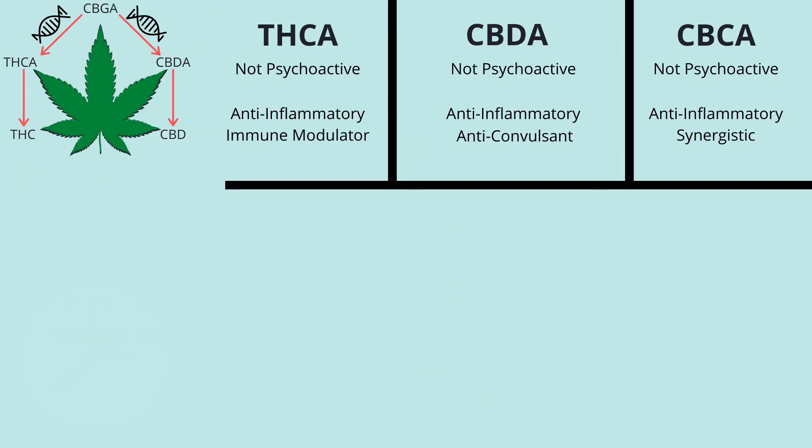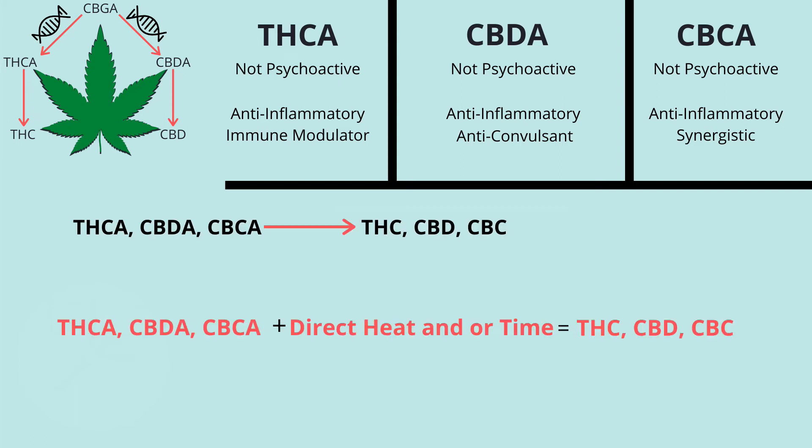Now that we have THCA, CBDA, and CBCA, they all have their own properties, some of which are listed below. A good thing to note is that THCA, CBDA, nor CBCA are psychoactive. Turning these into THC, CBD, and CBC only takes one final step and is an extremely simple one.